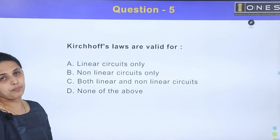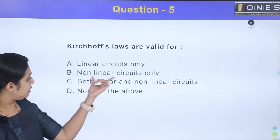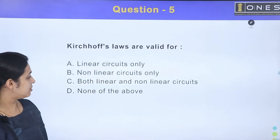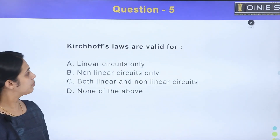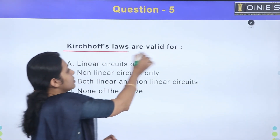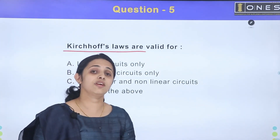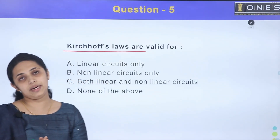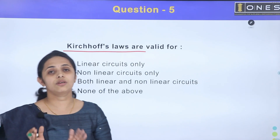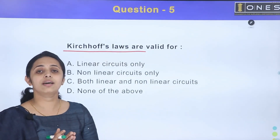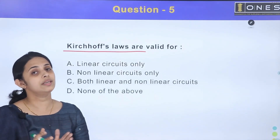Next question: Kirchhoff's laws are valid for — option A: linear circuits only, option B: non-linear circuits only, option C: both linear and non-linear circuits, option D: none of the above. Kirchhoff's current law states that the sum of currents meeting at any junction or point is zero.